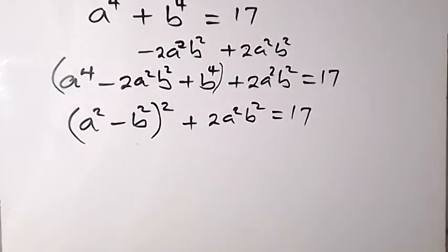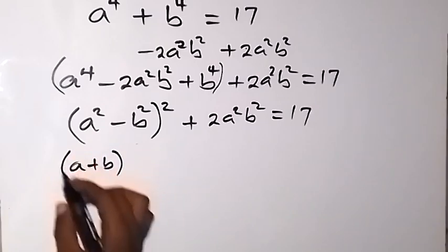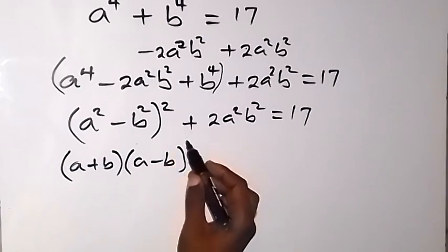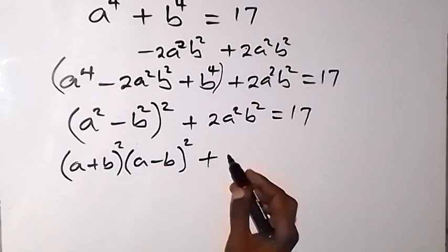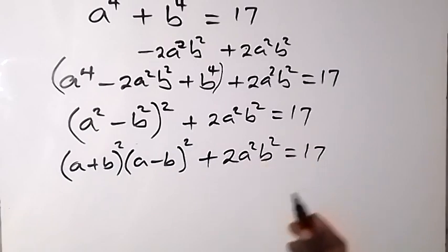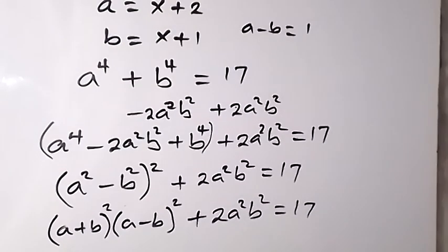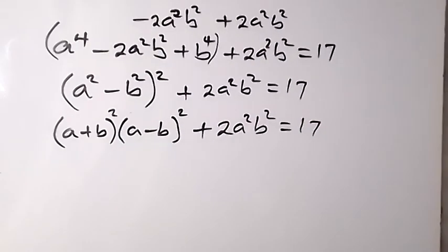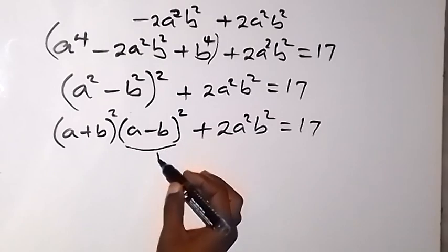Using the difference of two squares identity, a² - b² = (a+b)(a-b), so (a²-b²)² becomes (a+b)²(a-b)². Since a - b = 1, we have (a-b)² = 1, so the equation becomes (a+b)² · 1 + 2a²b² = 17.